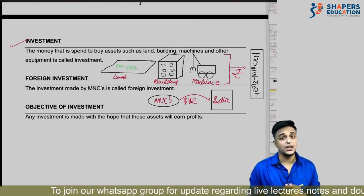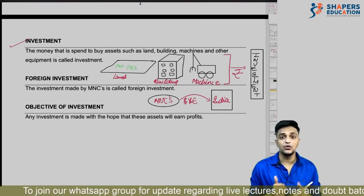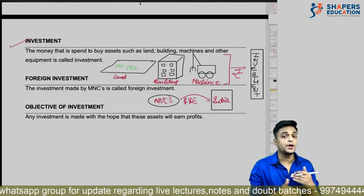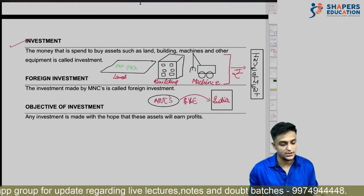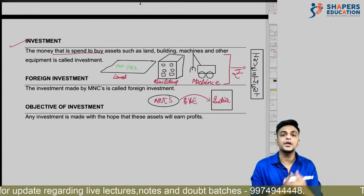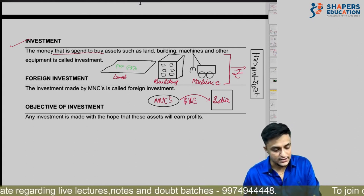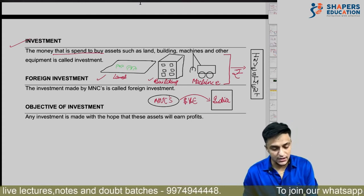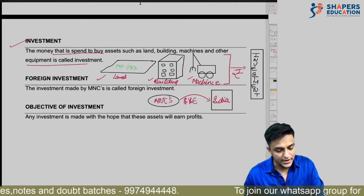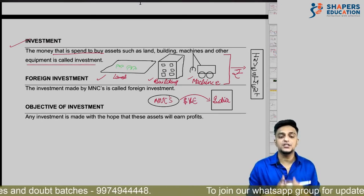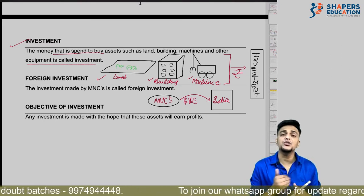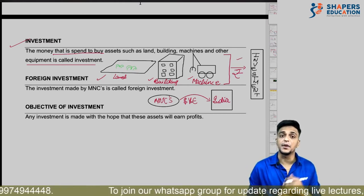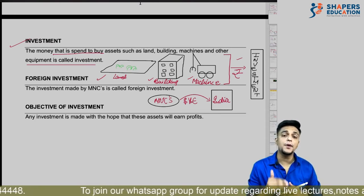Investment — you must have heard this term in regular life. Investment means putting money somewhere. The money that is spent to buy land, machines, and other equipment for companies — whatever we spend on land, buildings, machines, or other equipment and tools — that we call investment.